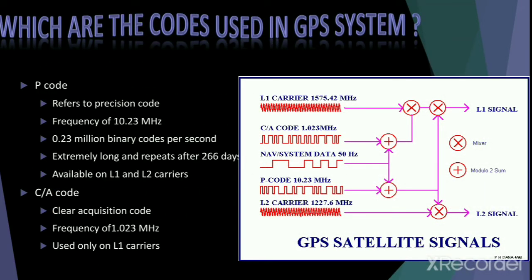The GPS satellites are broadly divided into three blocks. Block one refers to the developmental stage of GPS satellites. Block two represents the production satellites, while block three are the spare satellites. There are two different codes used in the GPS satellite system: the P-code and the C/A code. The P-code refers to the Precision or Protected code, with a frequency of 10.23 megahertz — 10.23 million binary codes per second. The P-code is extremely long and repeats only after 266 days, and is available on both L1 and L2 carriers. The C/A code, or Clear Acquisition code, has a frequency of 1.023 megahertz — one-tenth that of the P-code — and can be used only on the L1 carrier.